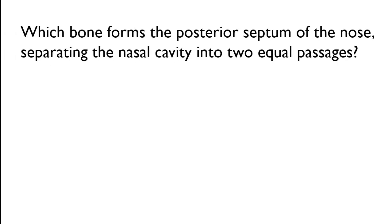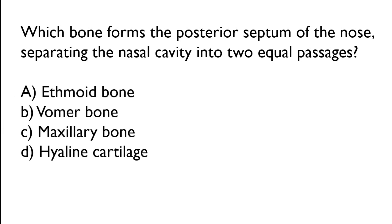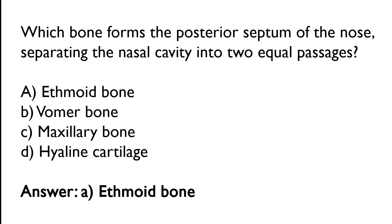Which bone forms the posterior septum of the nose, separating the nasal cavity into two equal halves? The correct answer is option A — the ethmoid bone forms the posterior septum of the nose, separating the nasal cavity into two equal halves.